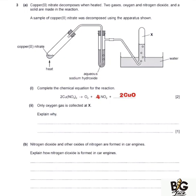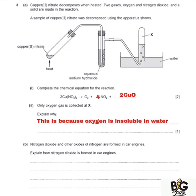Roman numeral 2 asks why only oxygen gas is collected at X. This is the displacement of water method. When collecting a gas using displacement of water, we only use this method for gases which are insoluble in water. Oxygen is insoluble in water. Apart from oxygen, another gas insoluble in water is hydrogen.